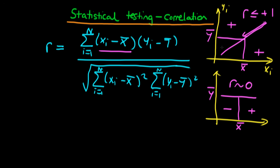I should have mentioned for the positive correlation example: if x was below its mean, so somewhere in the lower region of the graph, then x_i minus x-bar is going to be negative, but then so is y as well. So y_i minus y-bar is also going to be negative, which means that this whole expression is again going to be positive. So again we get r being somewhere near 1.